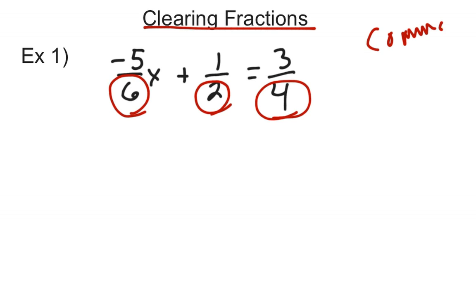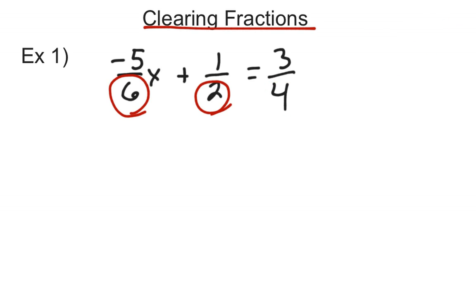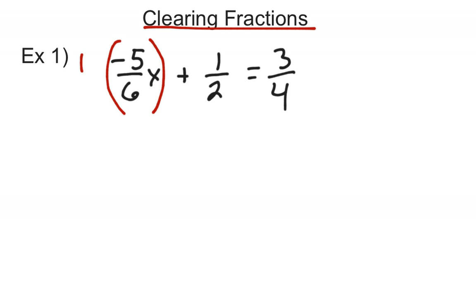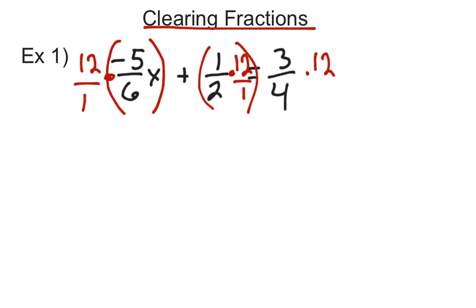So I'm coming up with a common denominator. 6, 2, and 4 all go into 12. Since the common denominator is 12, to clear fractions I'm going to take every single term in this equation and multiply it by 12. I'm going to take this 12 and multiply it by the negative 5 sixths. I'm going to take the 1 half and multiply that by 12 — since 12 is a whole number, I put it over 1. And the 3 fourths, I'm going to multiply it by 12. So we find a common denominator and multiply every single term in the equation by that common denominator.